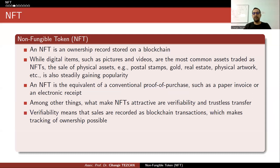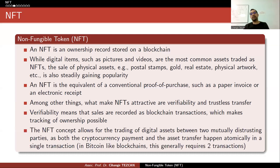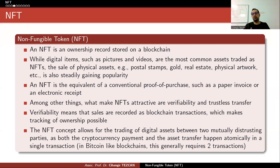Verifiability means that sales are recorded as blockchain transactions, which makes tracking of ownership possible. The NFT concept allows for the trading of digital assets between two mutually distrusting parties, as both the cryptocurrency payment and the asset transfer happen automatically in a single transaction in Ethereum or Ethereum-like blockchains with a smart contract. In Bitcoin-like blockchains, due to limited programmability, you may need to perform more than one transaction — one for the money transfer and one for the NFT transfer.